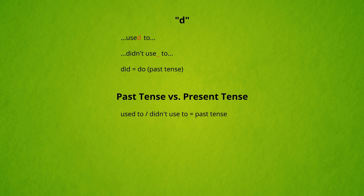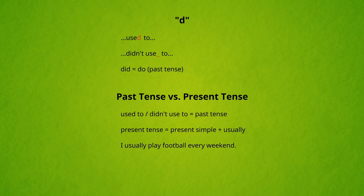Don't use 'used to' for present tenses. Instead, use the present simple plus 'usually.' For example: 'I usually play football every weekend.'